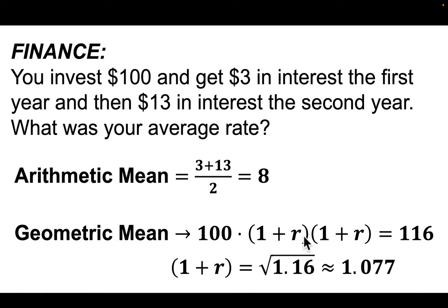So that would be 1 plus R squared equals 1.16. So we solve for that, we're taking the square root. And 1 plus R is the square root of 1.16. Now, that just means that 1 plus the interest rate is about 1.077.